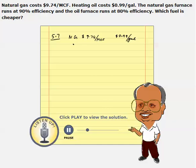We also know the furnace efficiencies of each of these. Natural gas furnace efficiency is 0.9, and the oil furnace efficiency is 0.8. These are given.